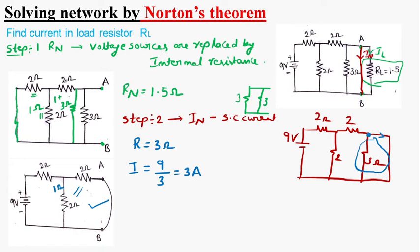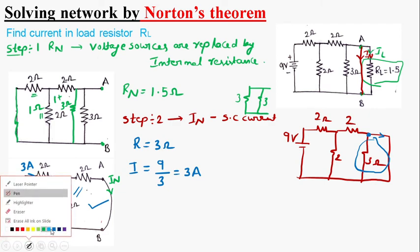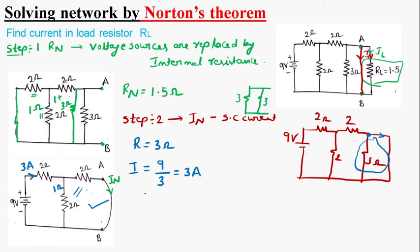The current due to the 9-volt source is I = V/R = 9/3, which equals 3 amperes. Now, we have to find the current flowing through the short circuit. Using the current division rule: IN = I × (opposite resistance) / (sum of resistances) = 3 × 2/(2+2) = 6/4 = 1.5 amperes.